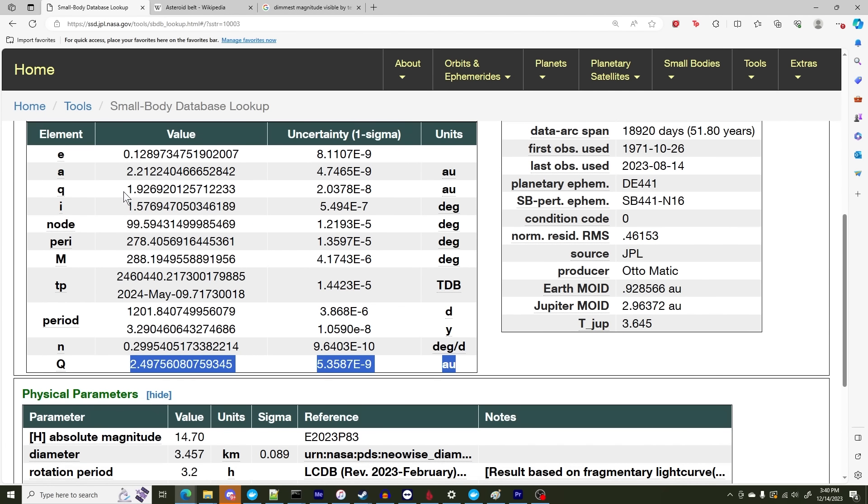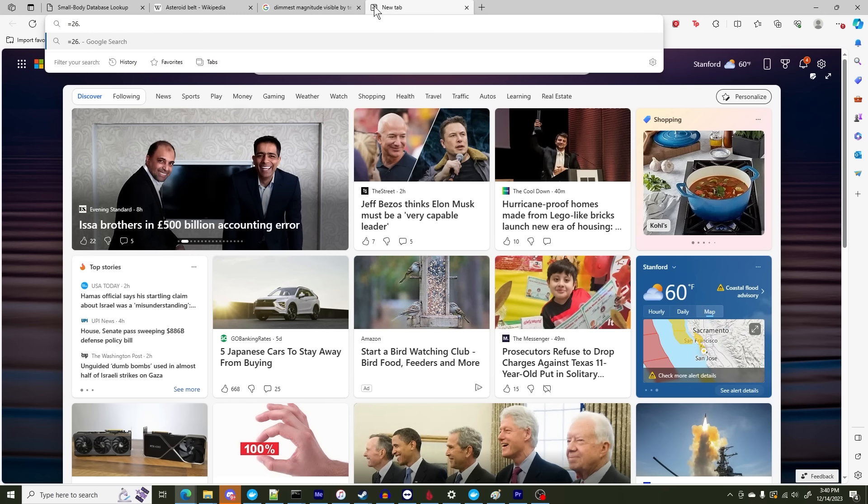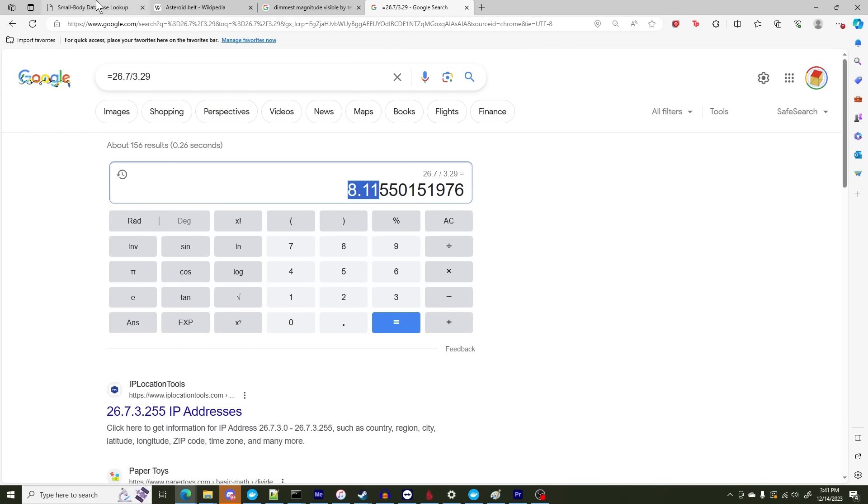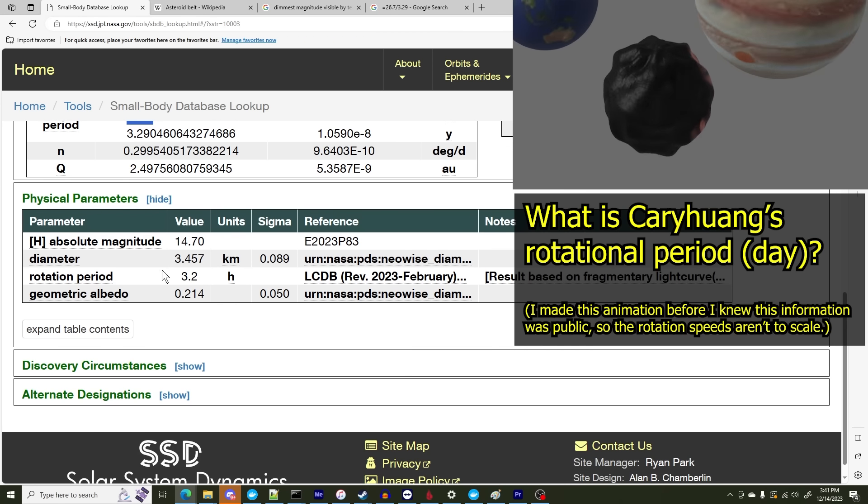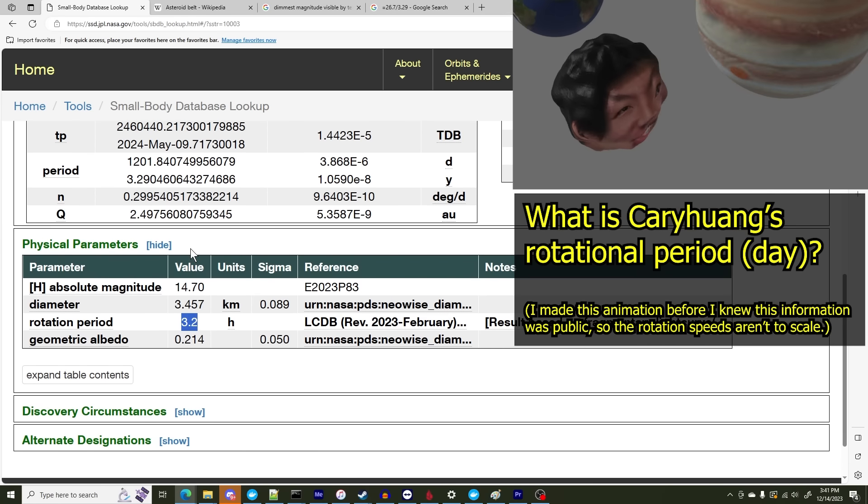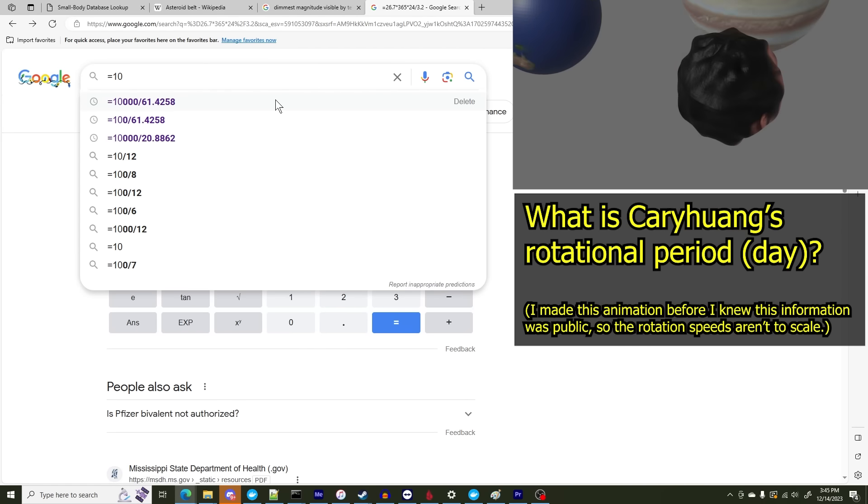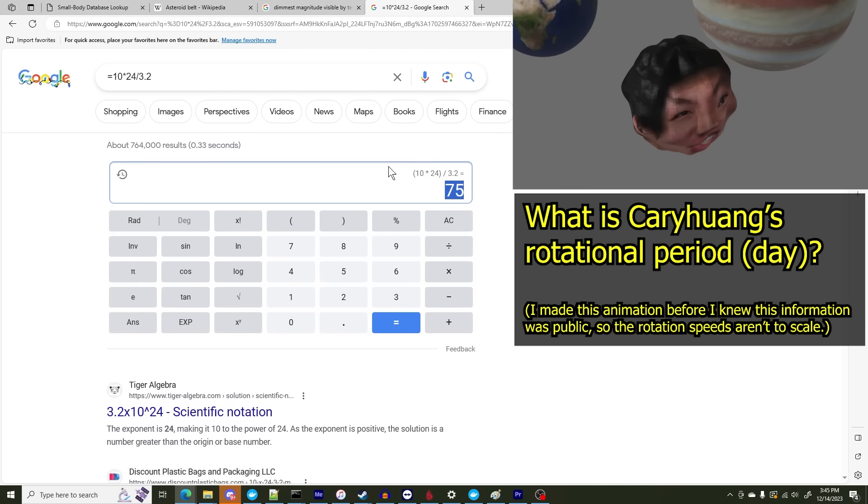But what I also thought was interesting is that Kari Huang's year is 3.3 Earth years. So it takes 1,201 days for Kari Huang to orbit the sun. So I can actually calculate my age in Kari Huang years. So I'm about 26.7 Earth years. But in Kari Huang years, I'm only 8.11 years old, if we're going by Kari Huang's standards. And then the day, like the rotational period for Kari Huang is only 3.2 hours. So that means that around 7 or 8 Kari Huang days pass for every Earth day.